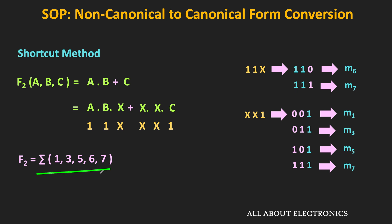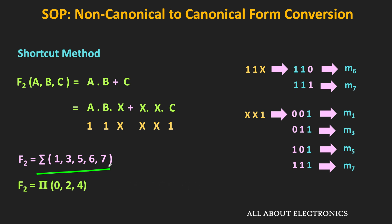For the equivalent canonical POS form, it will contain all the minterm numbers missing from the SOP form. From 0 to 7, the missing terms are 0, 2, and 4. So this is the equivalent canonical POS form. In this way, using the shortcut method we can easily expand any boolean expression into the equivalent canonical SOP form.